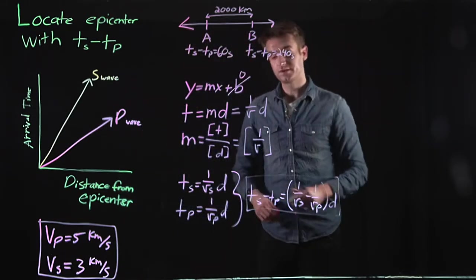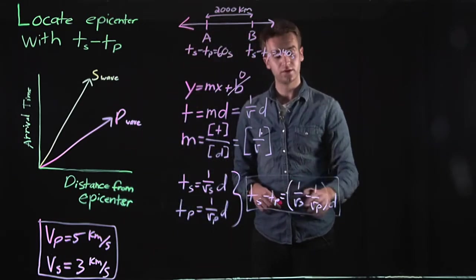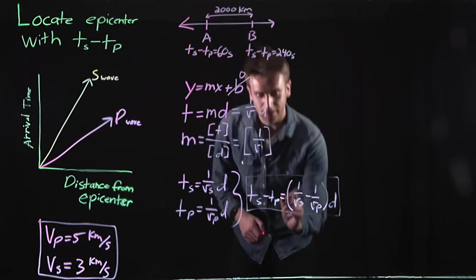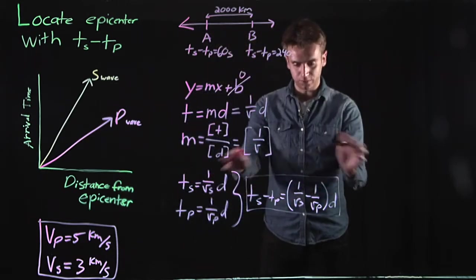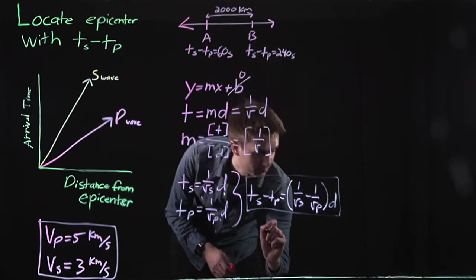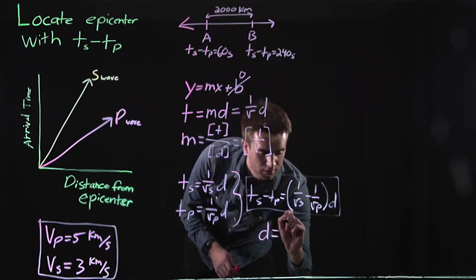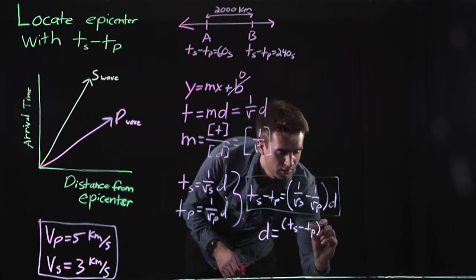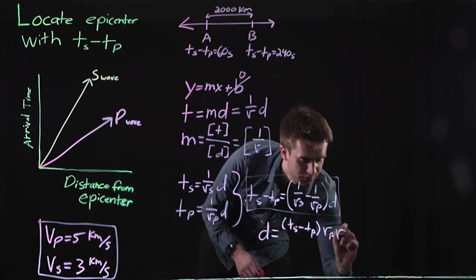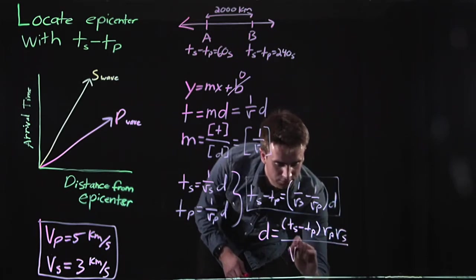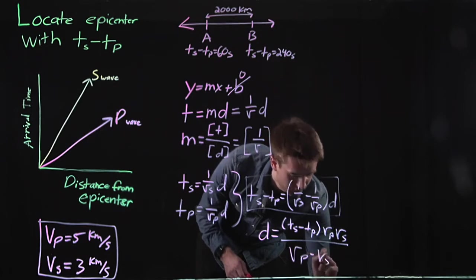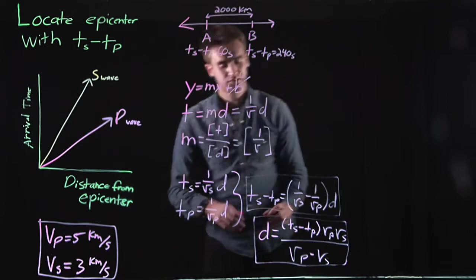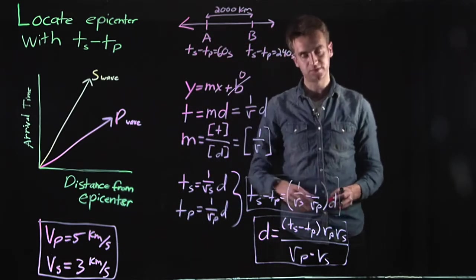We're interested in finding the distance to the epicenter, so we need to rearrange this equation to solve for d. After doing all of the arithmetic, what you should end up with is d equals (Ts minus Tp) times (vp times vs) over (vp minus vs). This equation describes the distance between the station and the epicenter of the earthquake.